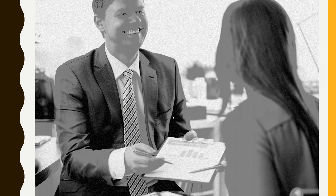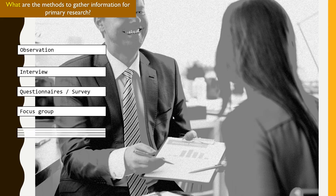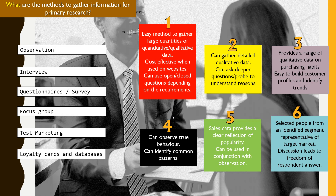Okay, it's time for us to check our answers. There are a couple of ways for us to gather information through primary research, and they're on the screen right now. Number one: easy method to gather large quantities of quantitative data, cost effective when used on websites, can use open or closed questions — that falls under questionnaires and surveys. Questionnaires and surveys allow you to gather large information by sending out a series of questions in bulk, and if placed on a website, people can click on it immediately and give responses.